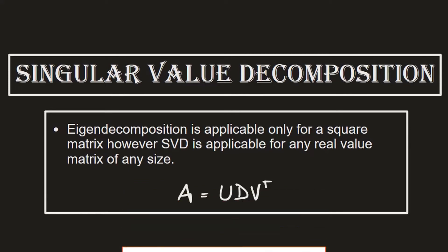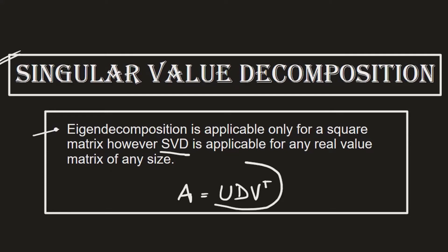Today we are going to talk about Singular Value Decomposition. From the previous lecture, you already know that we can do an eigen decomposition only for a square matrix. However, Singular Value Decomposition is applicable for a matrix of any given size, and it is represented as U · D · V transpose.